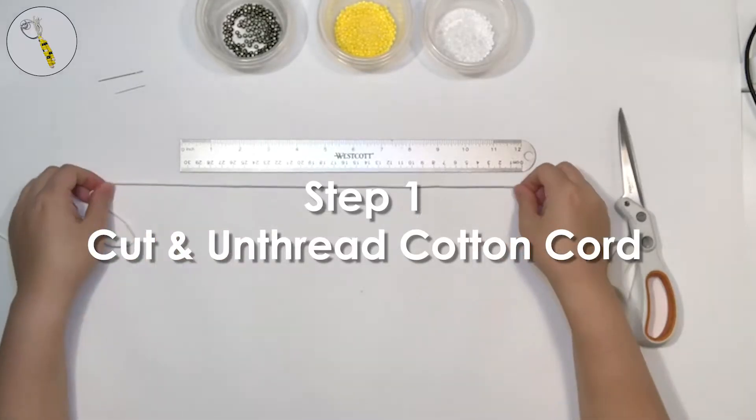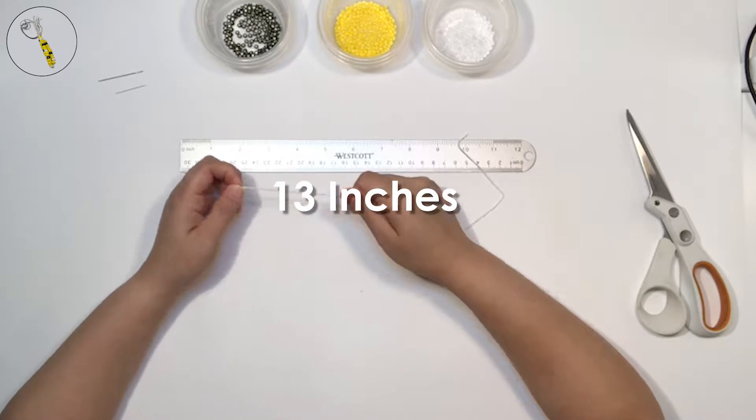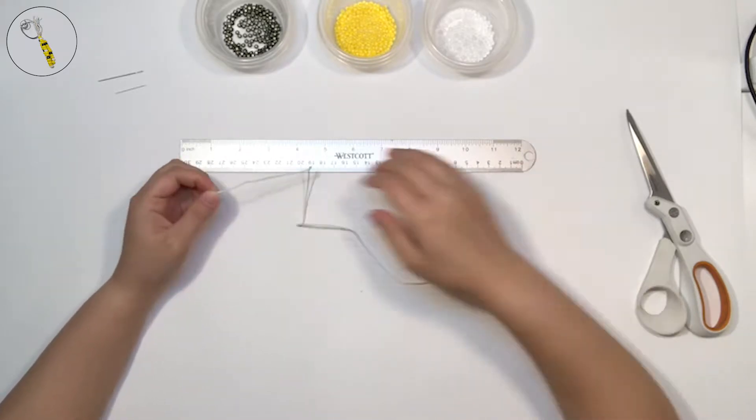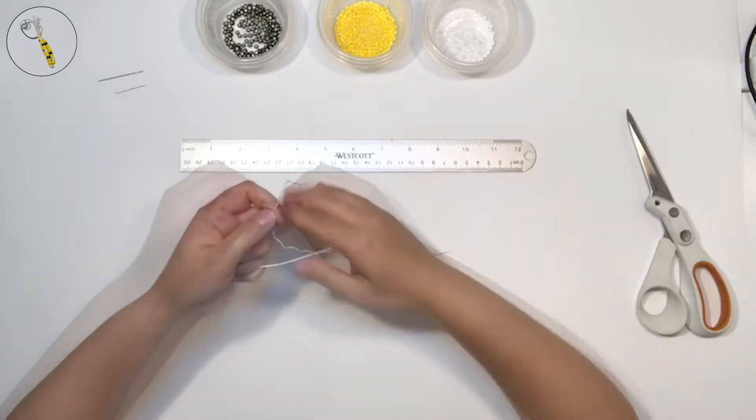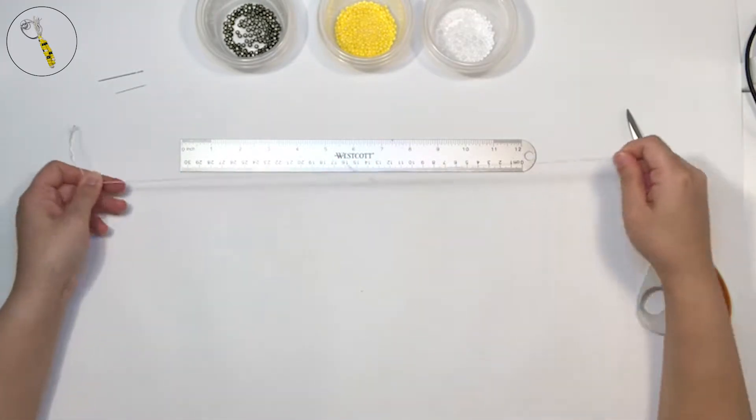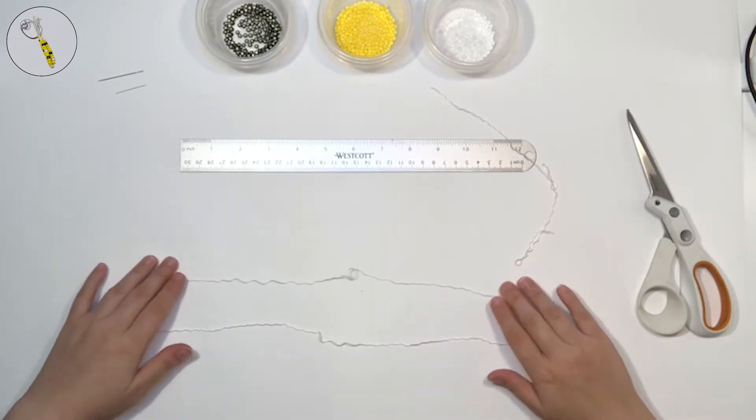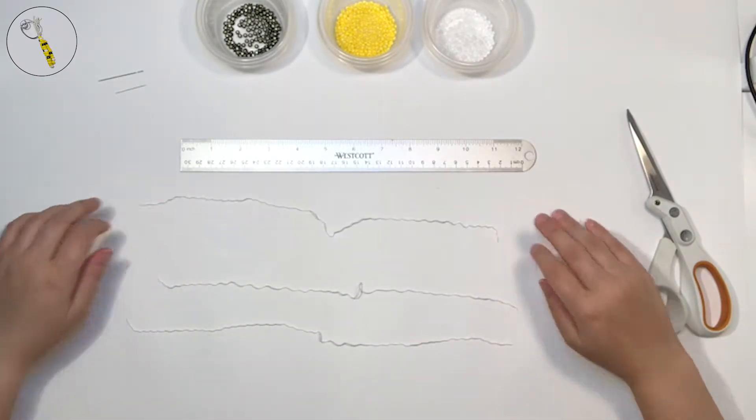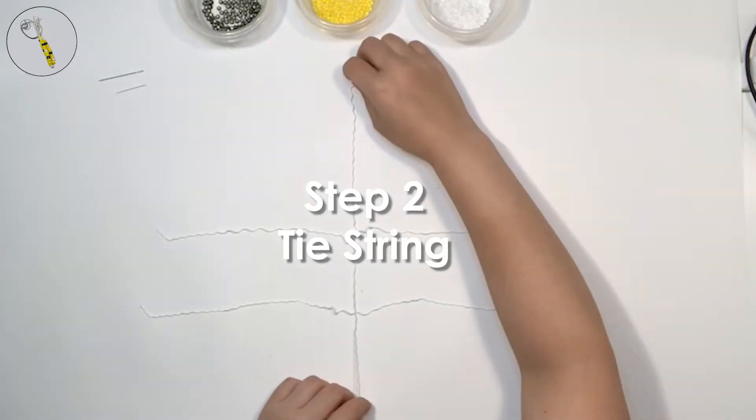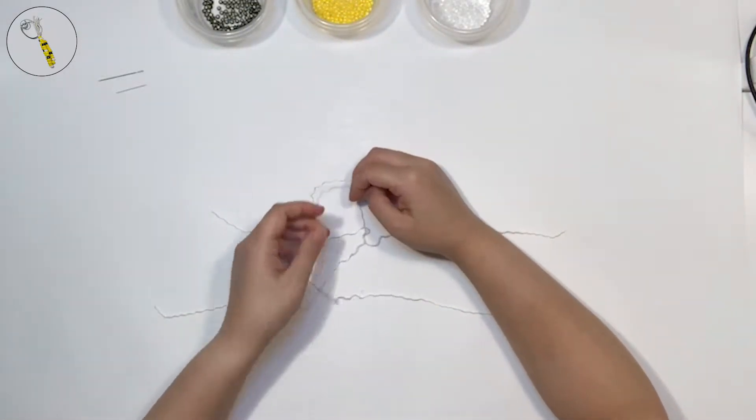Step one: cut and unthread the cotton cord. Cut about 13 inches of cotton cord and begin unthreading it by holding one end tight and spinning it in the opposite direction of its weave. Then slowly separate the cord into three thinner strings. Be careful not to tangle it up.